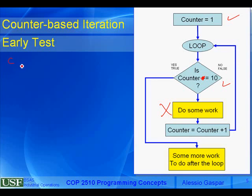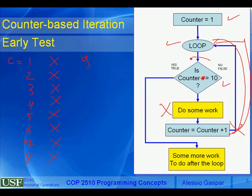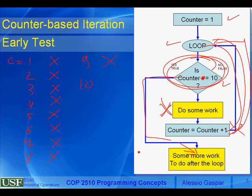What is the difference? Let's trace: counter=1. Enter loop. Is counter equal to 10? No. Do work. Increment to 2. Back to beginning. Not 10. Do work. Increment through 3, 4, 5, 6, 7, 8, 9. Increment to 10. Go back. Is it 10? Yes — exit. How many times did we execute? 9 times instead of 10. So this is again an off-by-one error.